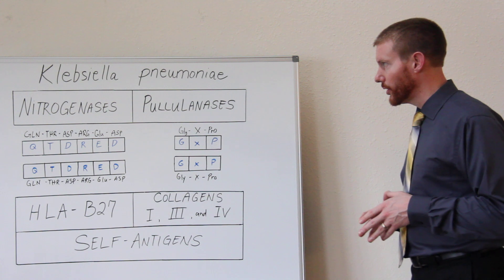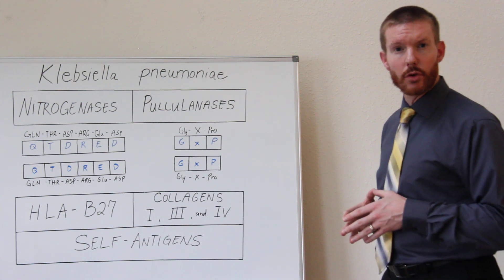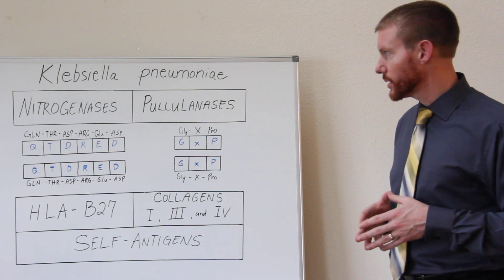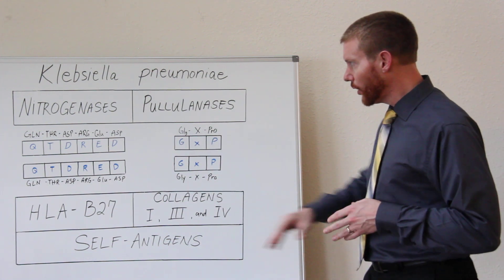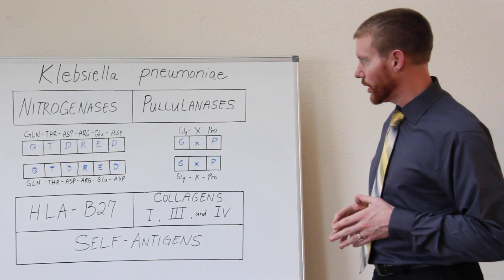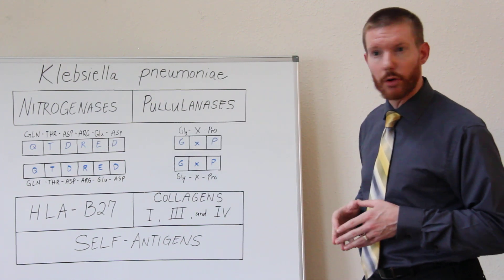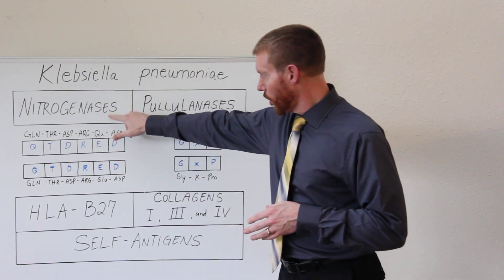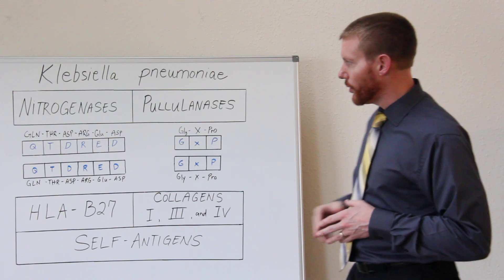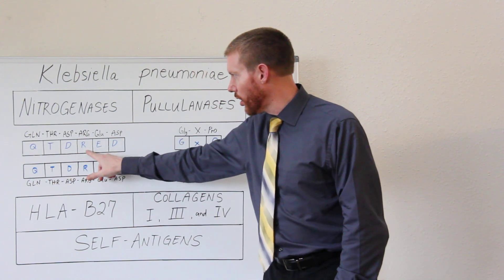At the top I have the bacteria Klebsiella. Klebsiella is a bacteria that in the medical literature has been associated with ankylosing spondylitis. It's not the only bacteria associated with AS, but it is one of them. And over here on the left side, we have a protein that is produced by the bacteria Klebsiella — it's the nitrogenase enzyme. Enzymes are also proteins. And this protein produced by the Klebsiella bacteria is represented by an amino acid sequence represented by the letters QTDRED.